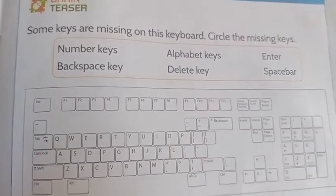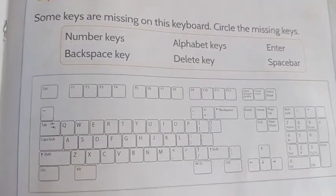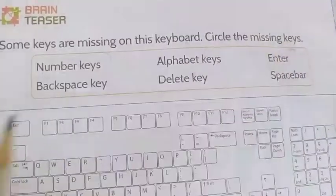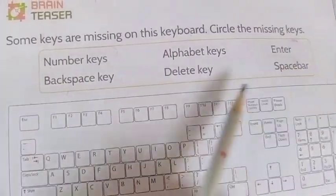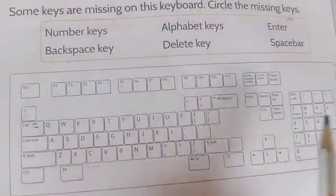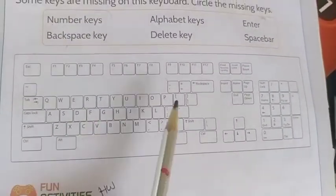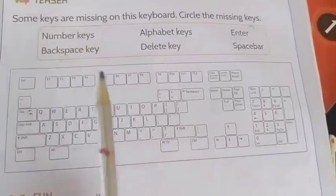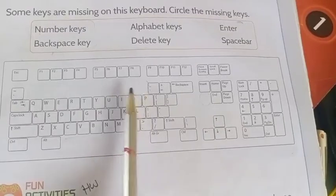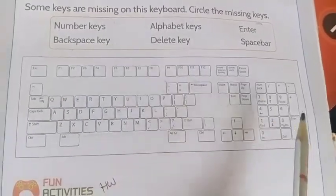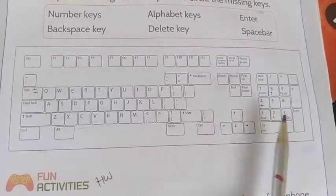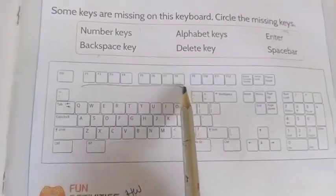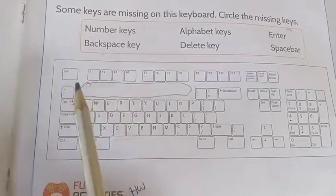Now come to page number 41, Brain Teaser. Some keys are missing on this keyboard — circle the missing keys. See here, the keys are written and the keyboard is given here. We have to circle which keys are not there. First is the number key. The number key should be there, but here the number keys are not present — so it is missing. Circle it.